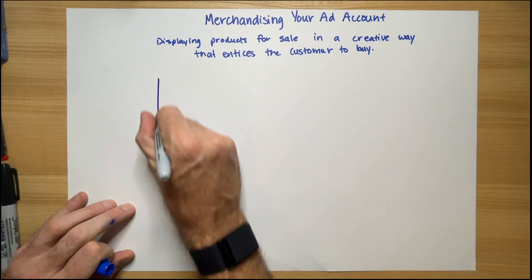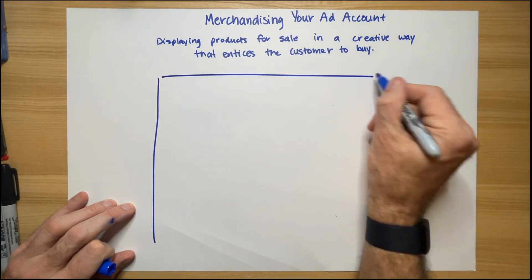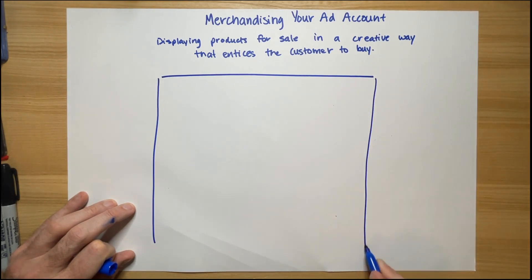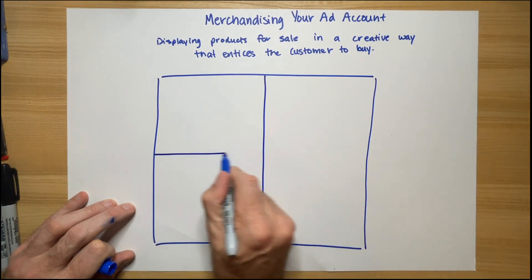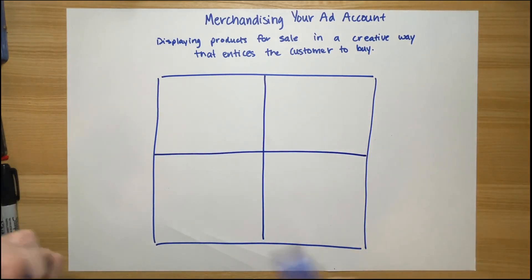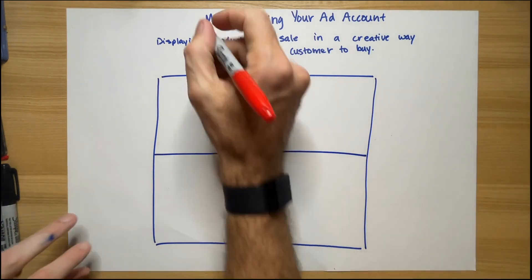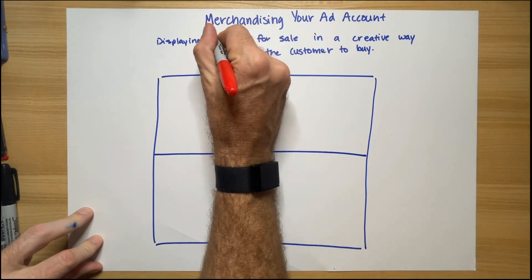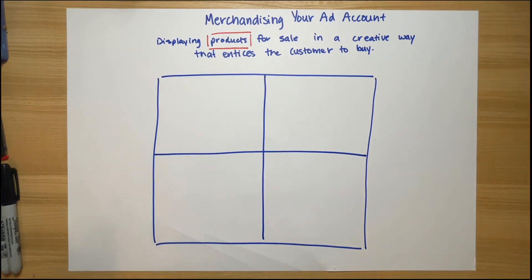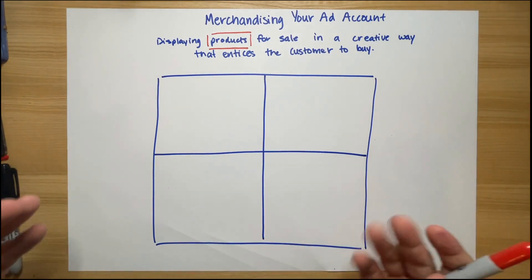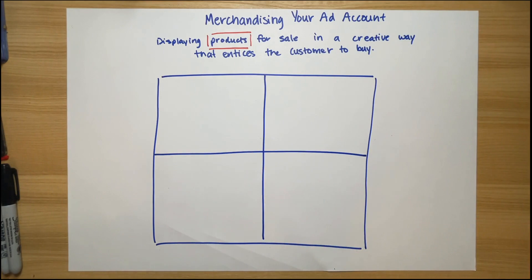Here's the example we want you to think about: a retail store window. A merchandiser has to make a choice about what they're displaying in that window and why. A great merchandiser — someone who does this job incredibly well — has a strategic process for deciding which products they are going to display. They are not going to simply let the customer choose anything they want, because they understand intimately which products produce the best outcomes for the business.